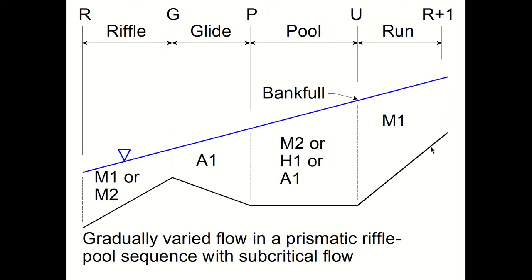That as we have known would be called an M1 gradually varied flow curve.